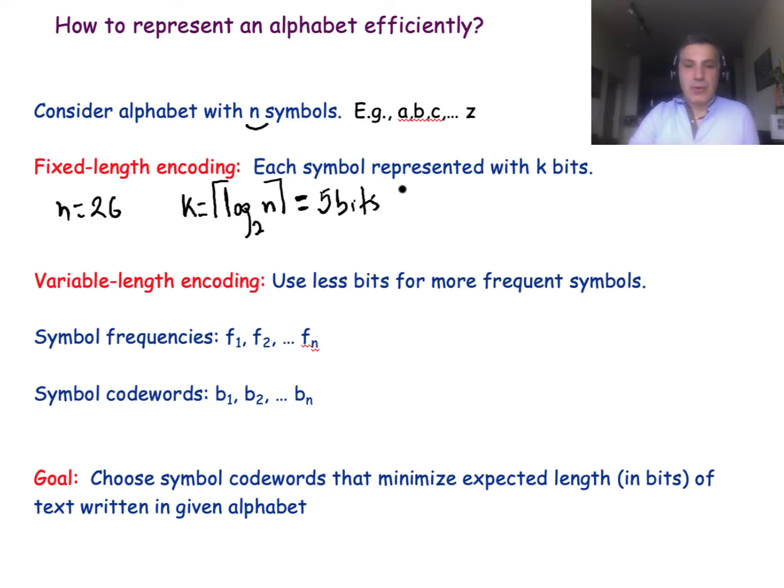And the same is true for all languages, but even beyond the domain of human language, even in more general alphabets, you often have that some symbols are used more often than others, even in things like music, for instance. Variable length encodings, where the basic idea is that for symbols that are used very frequently, we have a smaller number of bits. And for symbols that are used rarely, we have a larger number of bits.